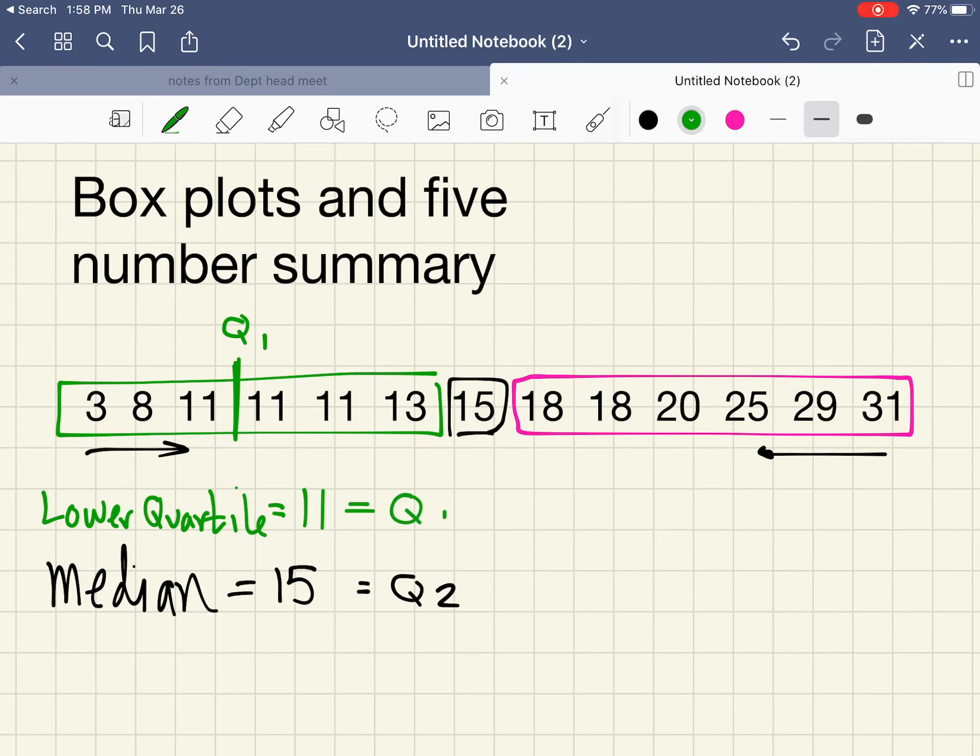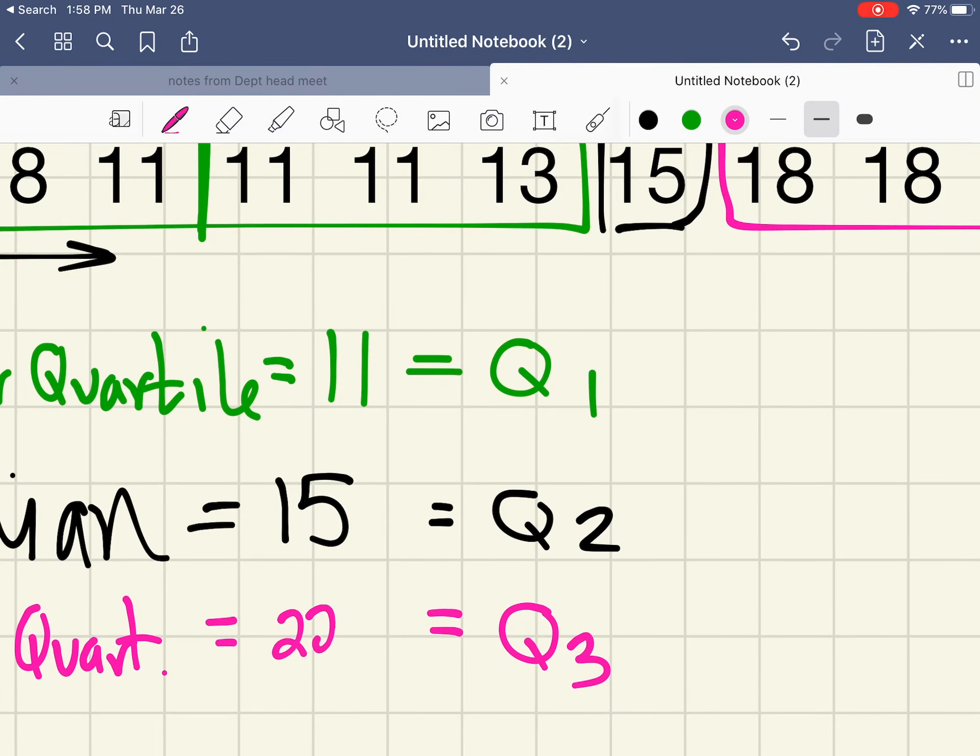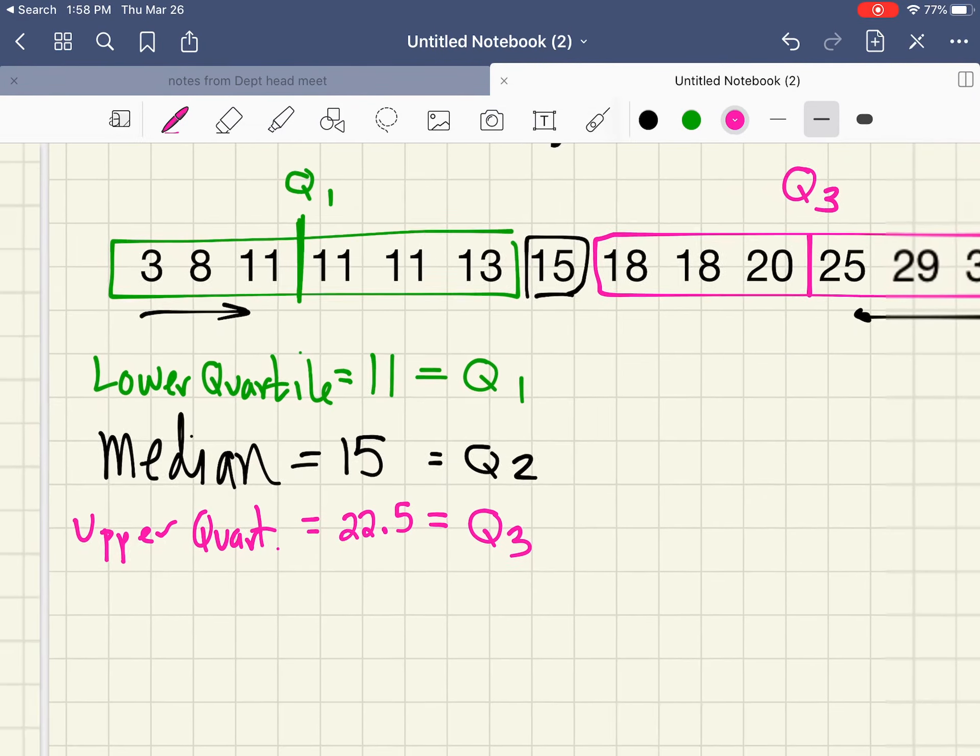Now you might imagine that the upper quartile—we're going to do the same thing with the upper half of the data. That's going to be called Q3, the upper quartile. It's the average of 20 and 25, which is 22.5.